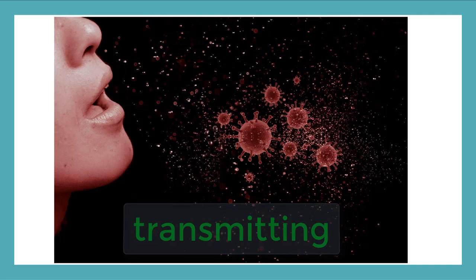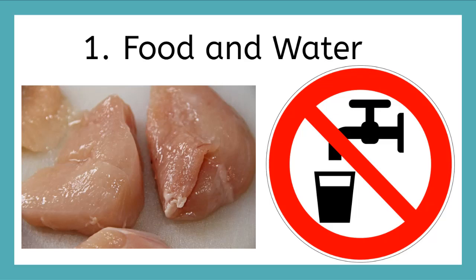There are four main ways pathogens can spread. The first one is through food and water. Sometimes food can be undercooked or sewage makes its way into the water supply. And when humans ingest this bad food or water, there are pathogens that can make them very sick. An example of this is food poisoning from salmonella.